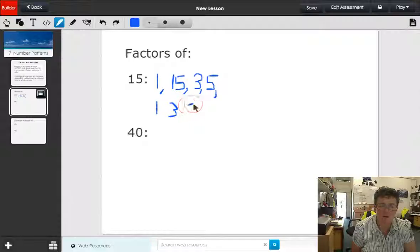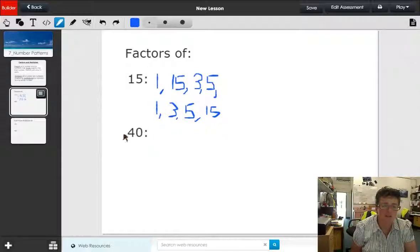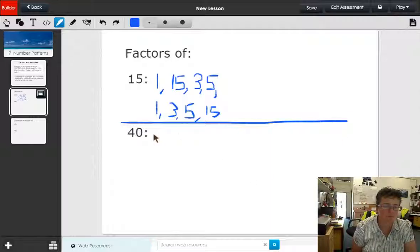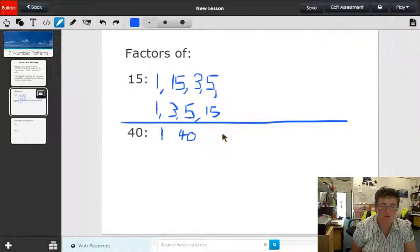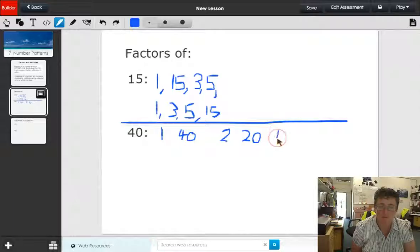So the factors of 40. Let's go through the process again. If we start from the number one, it's one times 40, and we've got two, two times 20. Three, does three go into 40? No it doesn't. Four goes into 40 ten times. Five goes into 40 eight times.